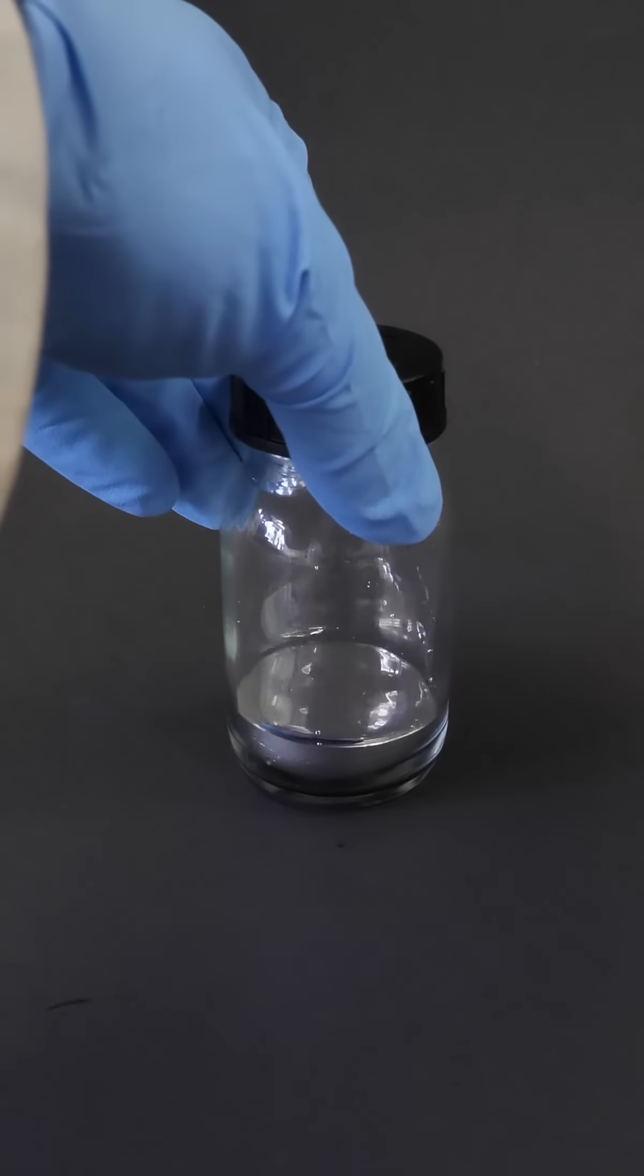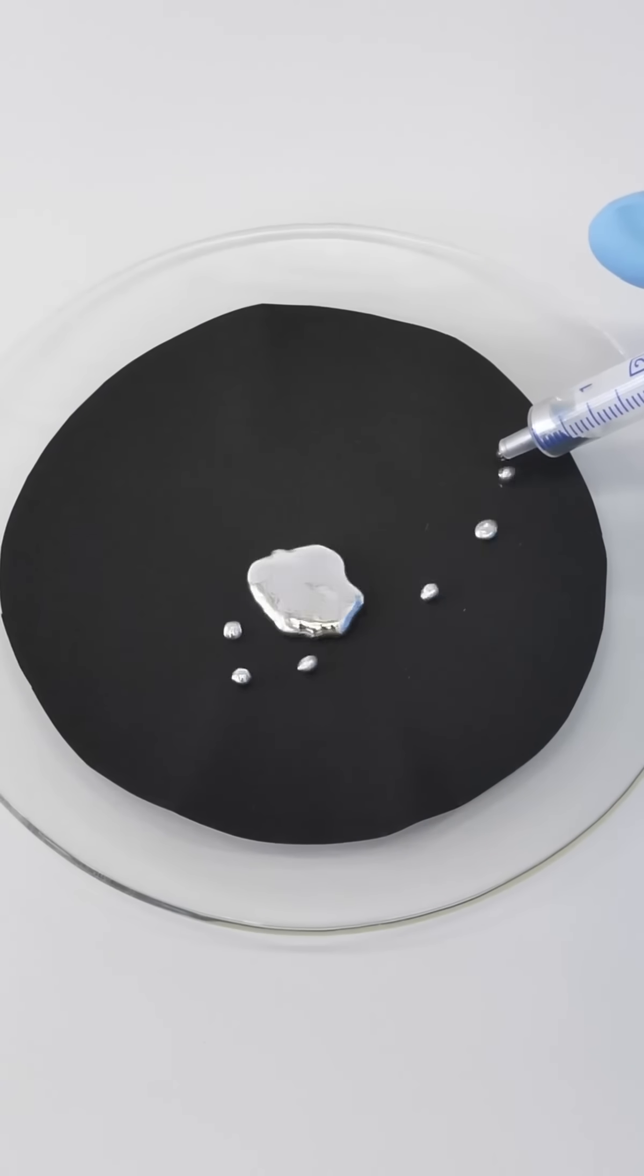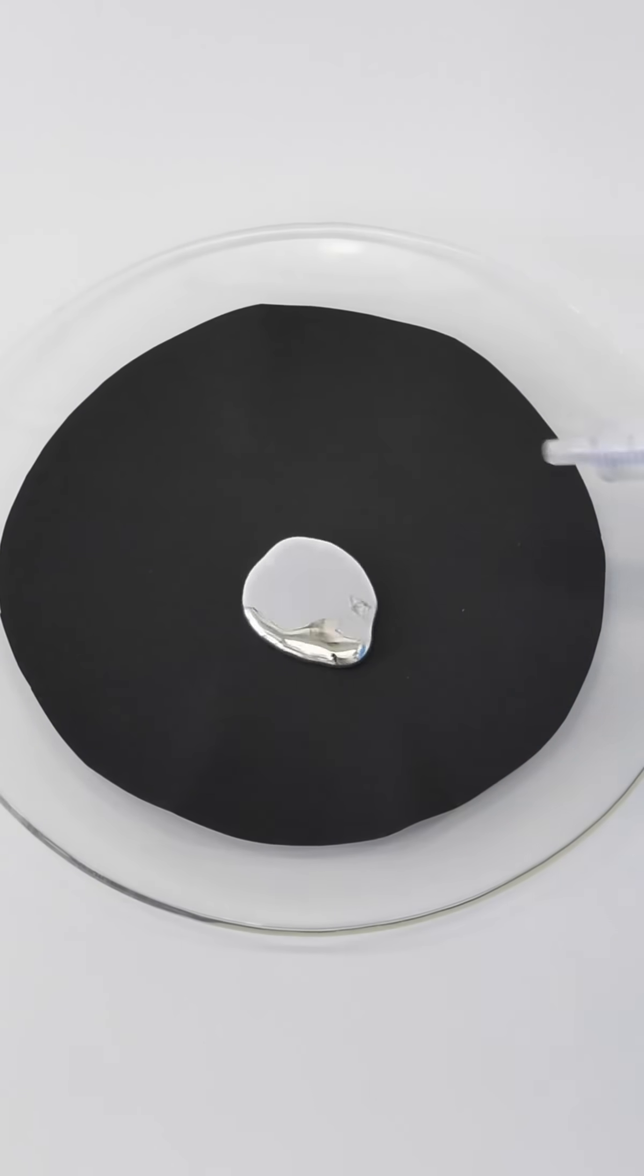Mercury can dissolve many metals and it was once used to separate gold from other metals to obtain pure gold. But unfortunately, mercury is highly toxic. It also has a very high density. These two milliliters weigh nearly 30 grams.